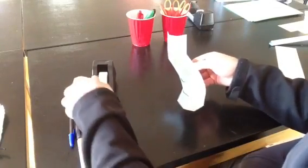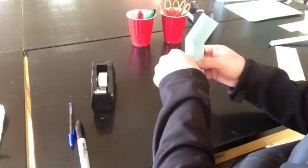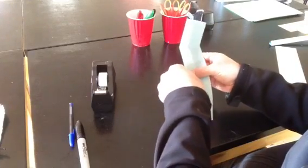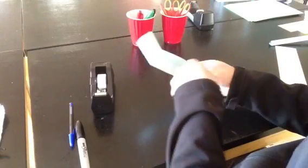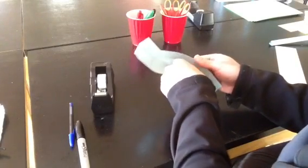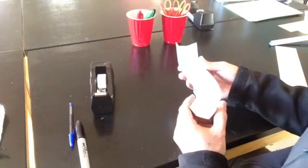You can also put the tape on the inside, it doesn't really matter. Depends on how neat you want it to look or how strong you want it to be. If you put tape on the front and the back, it's going to be a stronger track than if you just put it on one side. And that's how to make a curve in your track.